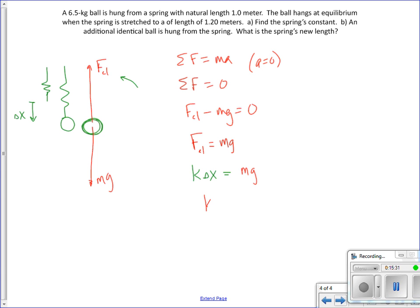We're looking for the spring's constant. K equals mg over delta x. Or 65 newtons divided by delta x. It says that this was natural length one meter. It's now 1.2 meters long. The delta x, the change in length, is 0.2 meters. So k equals 325 newtons per meter.